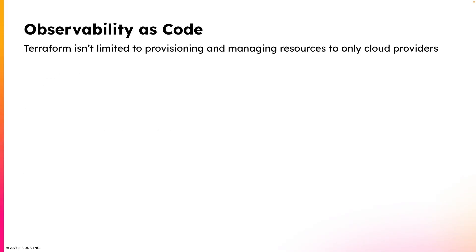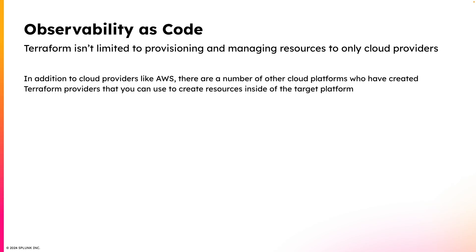Now that we've talked about infrastructure as code and introduced you to Terraform, let's talk about observability as code. I've been using AWS a lot in my examples, but Terraform isn't limited to provisioning and managing resources only on cloud providers. There are a large number of cloud-based applications who have created what are called Terraform providers that you can use to create resources inside of their platform. I consider observability as code a subset of infrastructure as code because when you're implementing observability as code, you're using an IAC tool to do that. But depending on how you look at it, you could also see it as an extension of infrastructure as code.